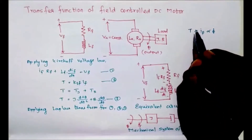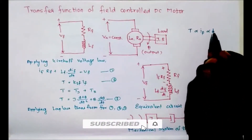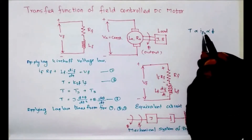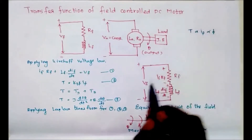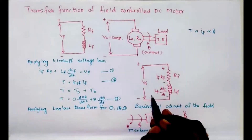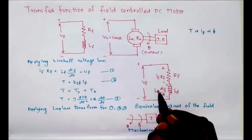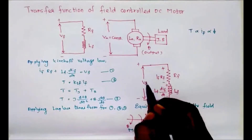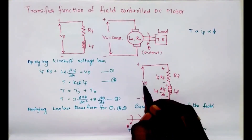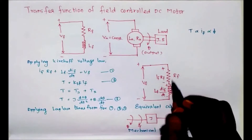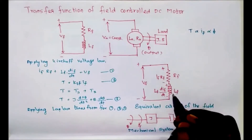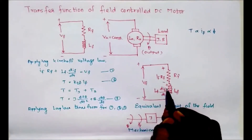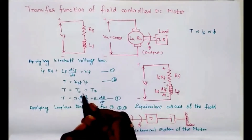We know the basic relationship: torque is directly proportional to phi, and phi is directly proportional to If. Therefore torque is directly proportional to If. This is the field equivalent circuit. Applying Kirchhoff's voltage law: Vf equals the drop across the resistor plus the drop across the inductor, giving If·Rf + Lf·(dIf/dt) = Vf.